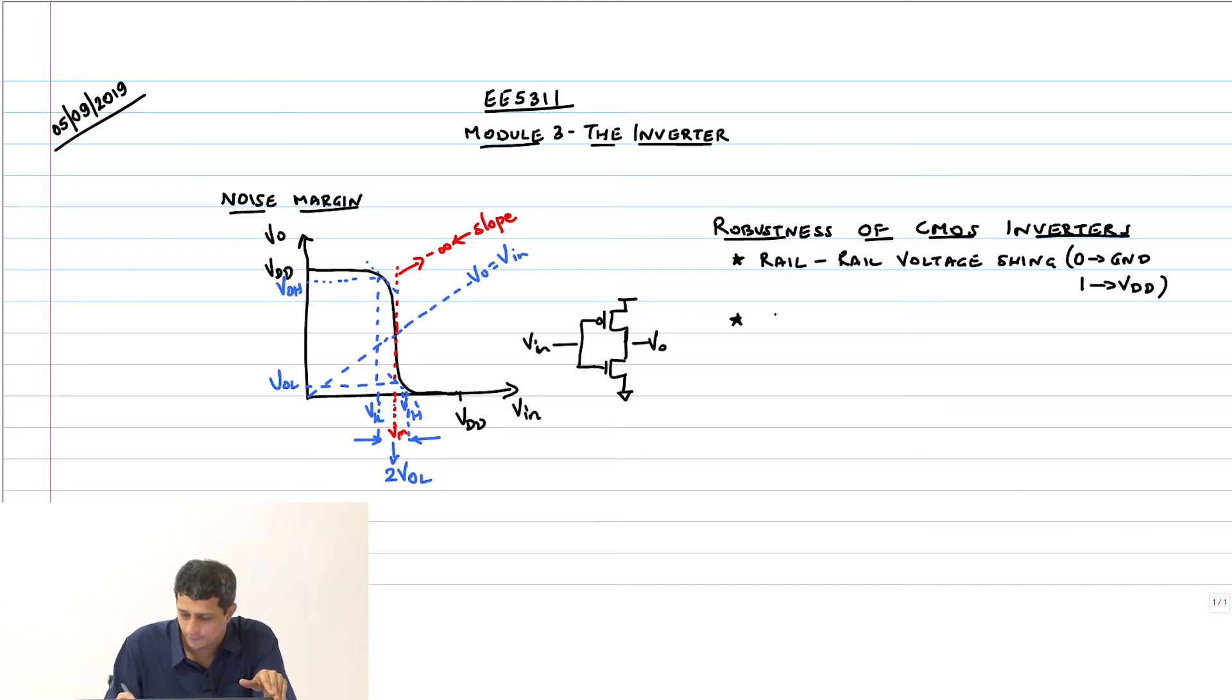Second important point: it is ratio-less, which means it does not depend on what my value of W_p and W_n are. Whatever the values, the voltage swing is rail to rail. It is a ratio-less logic which means it is independent of W_p by W_n. You will see why it is called ratio-less because later we will do ratio logic where it will depend explicitly on this W_p and W_n value.